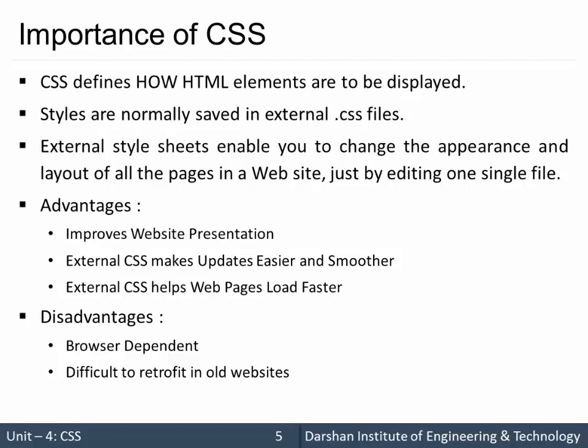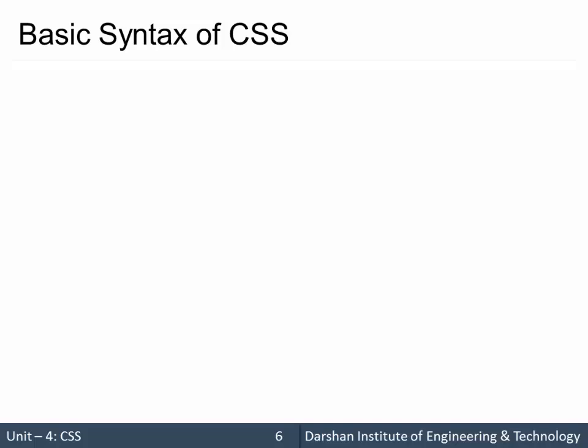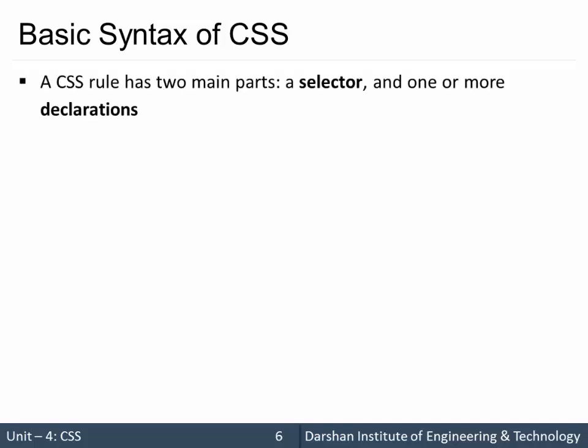Those are the advantages and disadvantages of CSS. Next, what is the basic syntax of CSS — how do we write CSS? A CSS rule has mainly two parts: a selector and one or more declarations. You can specify any number of declarations within a particular selector.